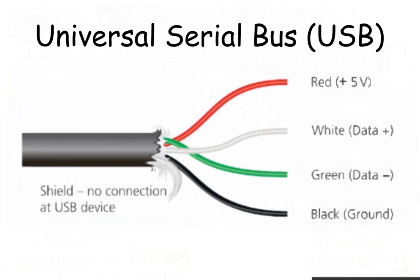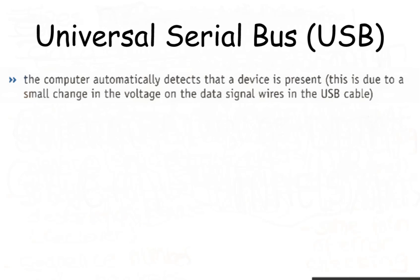As this figure shows, the USB cable consists of a four-wire shielded cable with two wires for power (red and black). The other two wires, white and green, are for data transmission. When a device is plugged into a computer using one of the USB ports, the computer automatically detects that a device is present. This is due to a small change in the voltage on the data signal wires in the USB cable.